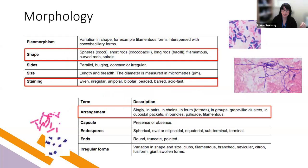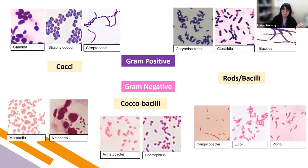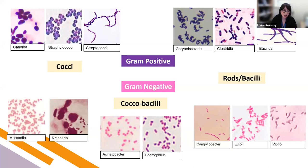We can get further information by looking at the cells — their morphology, shape, staining, and how they arrange themselves. For example, looking at gram-positive organisms: staphylococci and streptococci both stain as gram-positive in purple, but morphologically look very different. Staphylococci clump together like bunches of grapes, while streptococci prefer to form chains or sometimes pairs. So very quickly, if a patient presents with cellulitis and the blood culture is positive, you can determine whether the infection is due to staphylococci or streptococci.